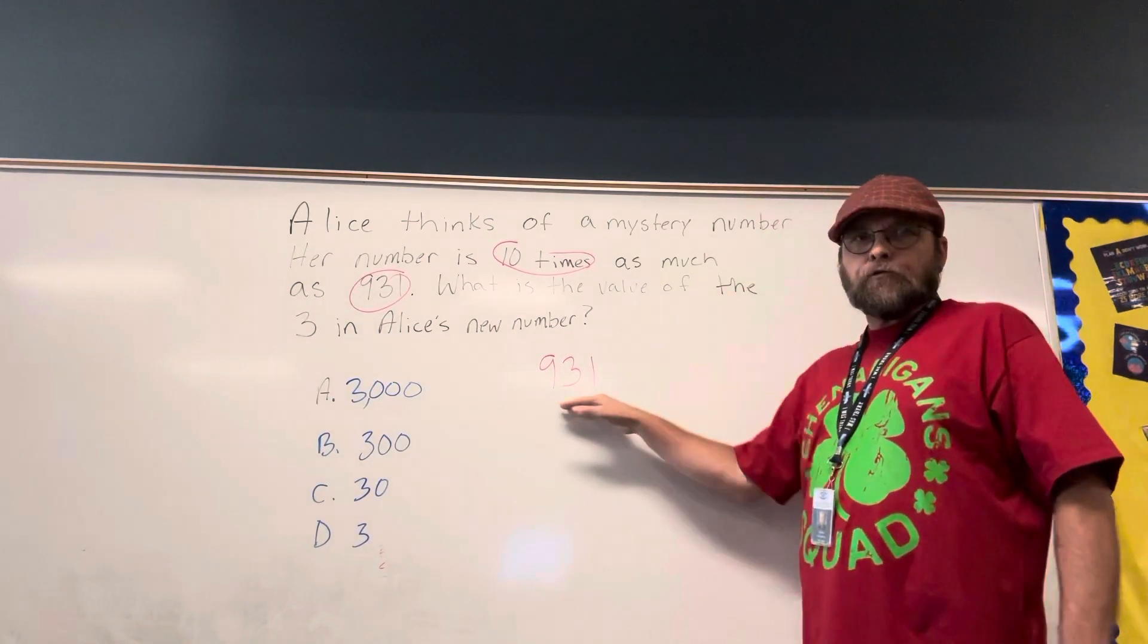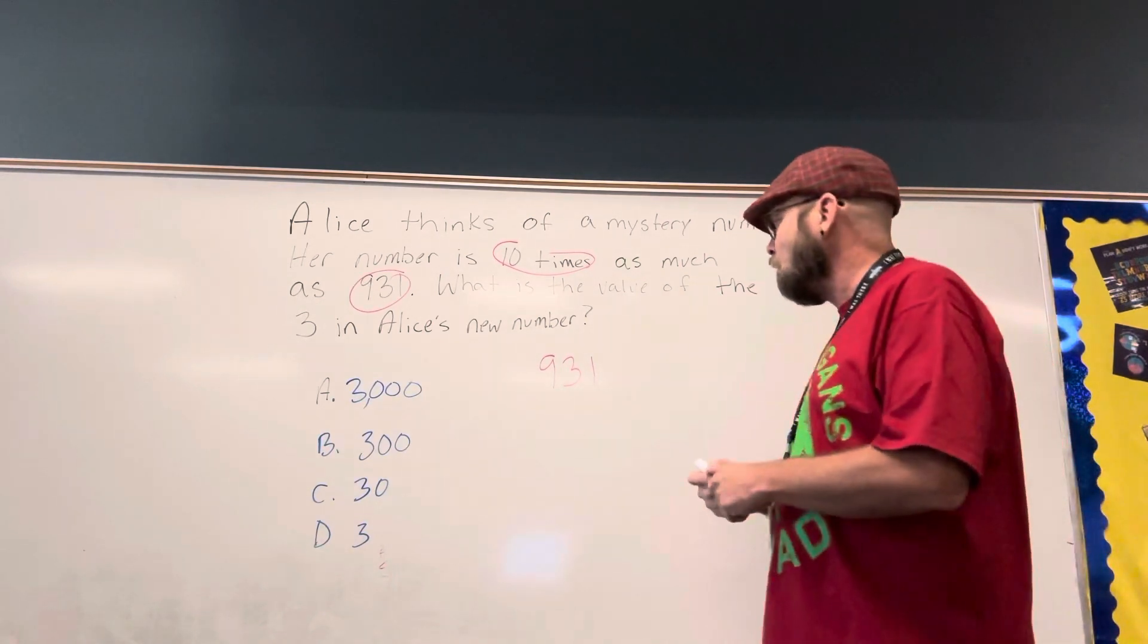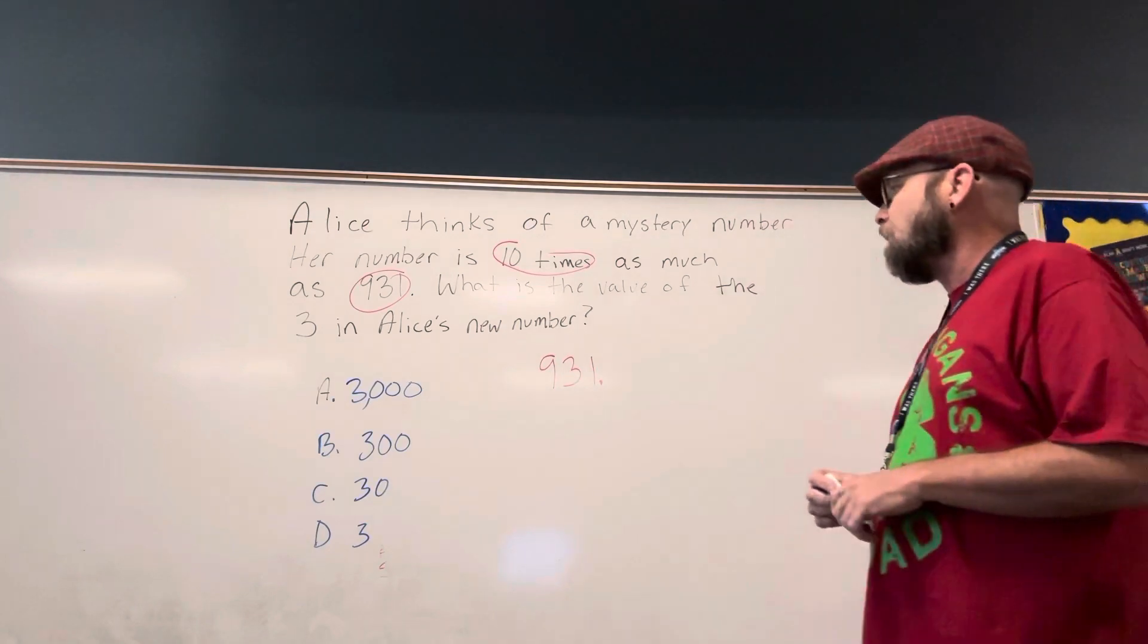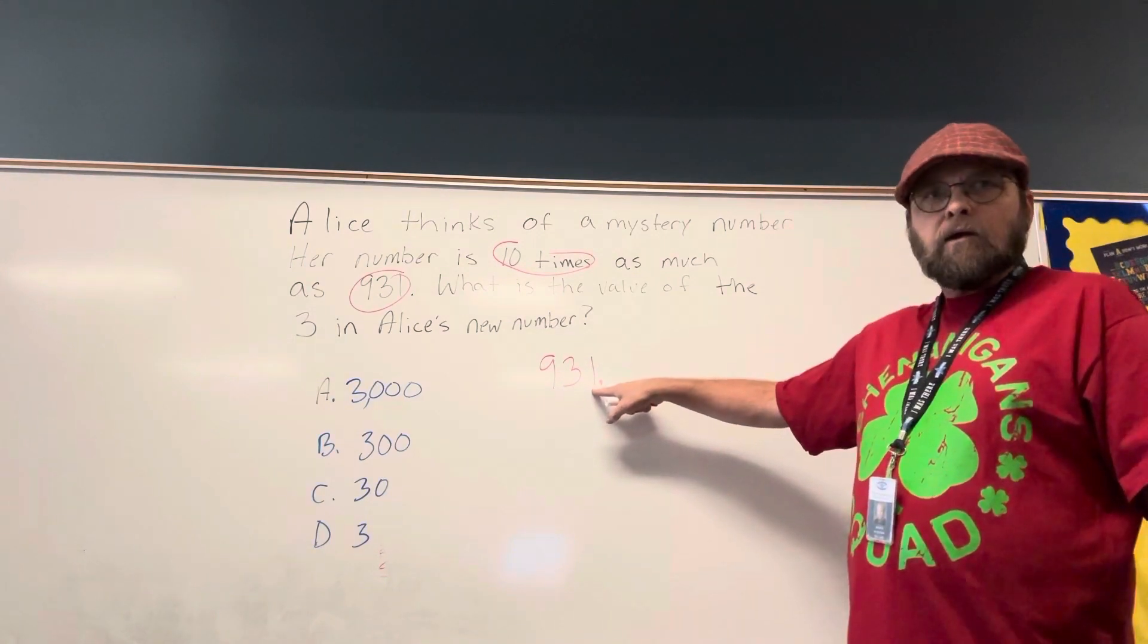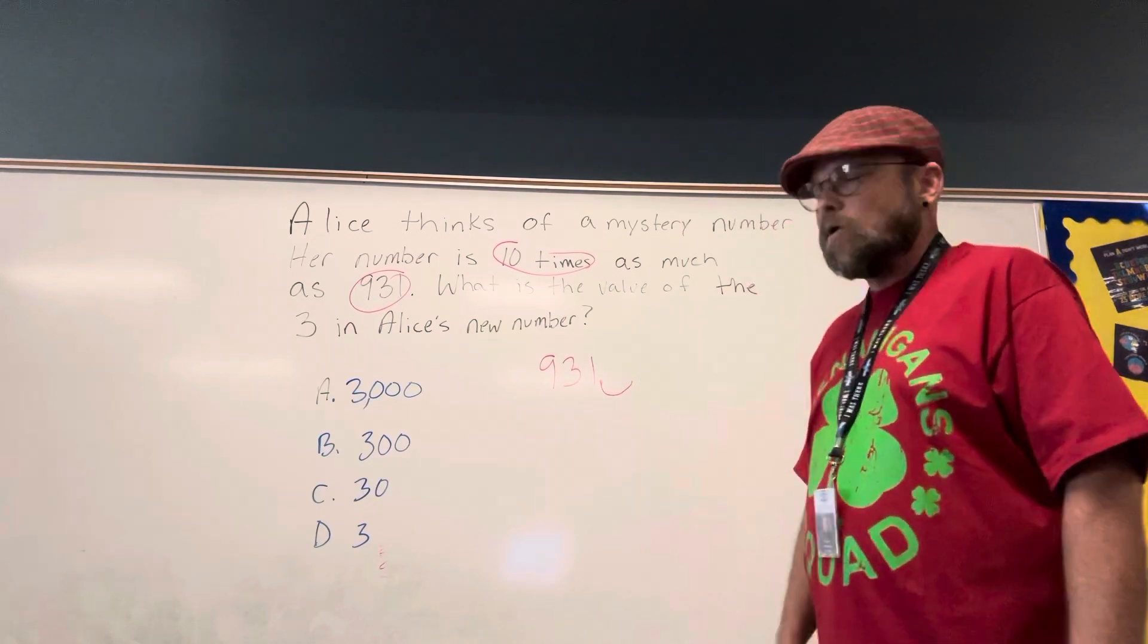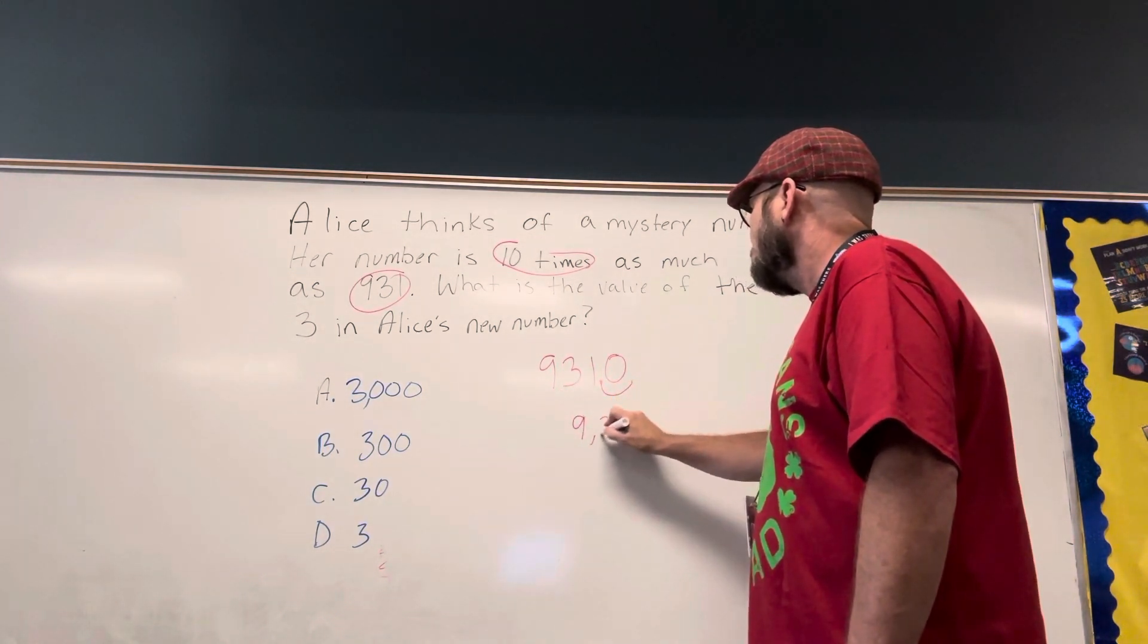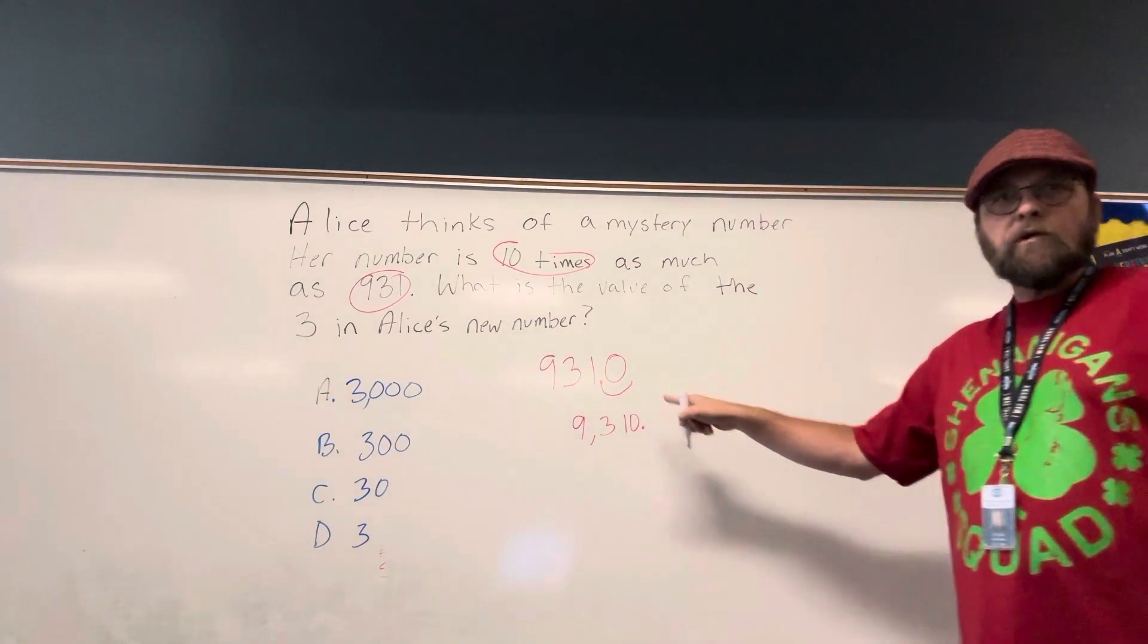First of all, the number 931 does have a decimal point. The decimal point is always behind the one's place, and the one is in the one's place. Now, if I'm multiplying a number by ten, I'm going to move. I want to make it ten times bigger than this, which means I'm moving the decimal point one place to the right. That's why you're adding the zero. So now we went from 931 to 9,310, but the decimal point moved from behind the one to now behind a zero.